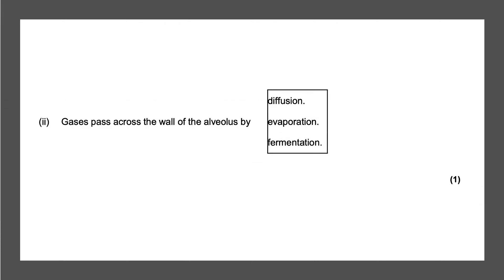Next question: gases pass across the wall of the alveolus by — and we have three options. Fermentation happens with yeast so it won't be that. Evaporation happens when water is evaporating. Diffusion is the correct answer because gases travel by diffusion into and out of cells, and that will give you a mark.